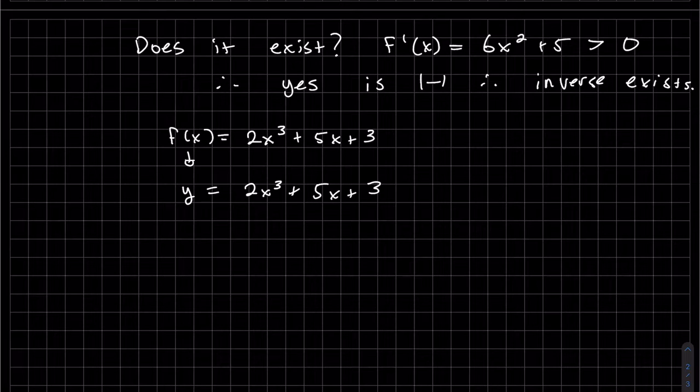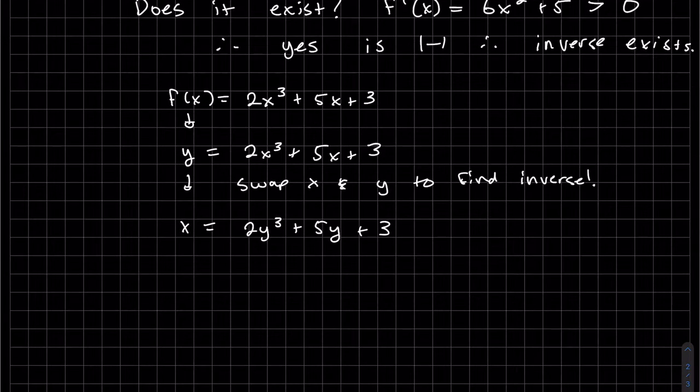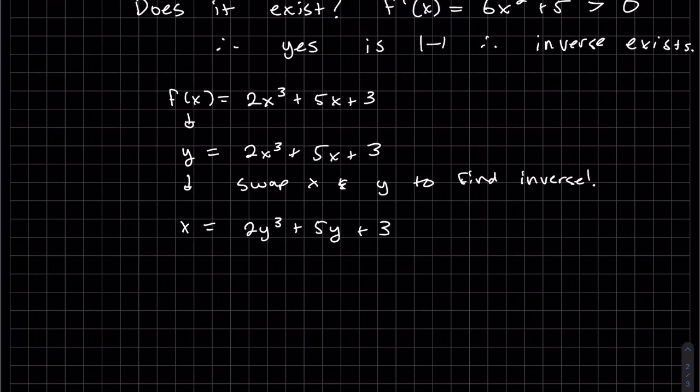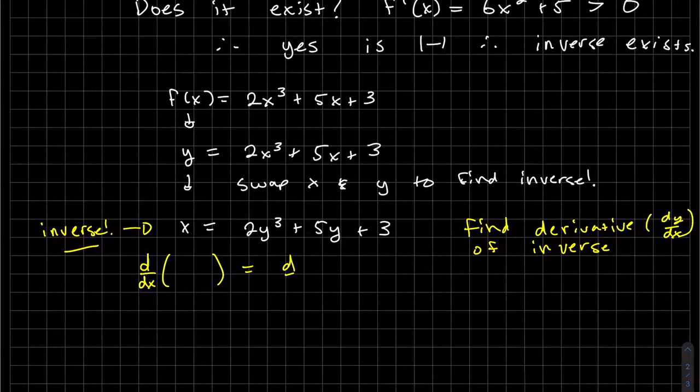And to find our inverse, the nice thing about this is we don't have to solve for y in order to find the derivative of the inverse. So it's much simpler. We just take the derivative of both sides in terms of x. Again, we want to find. And this is my inverse.